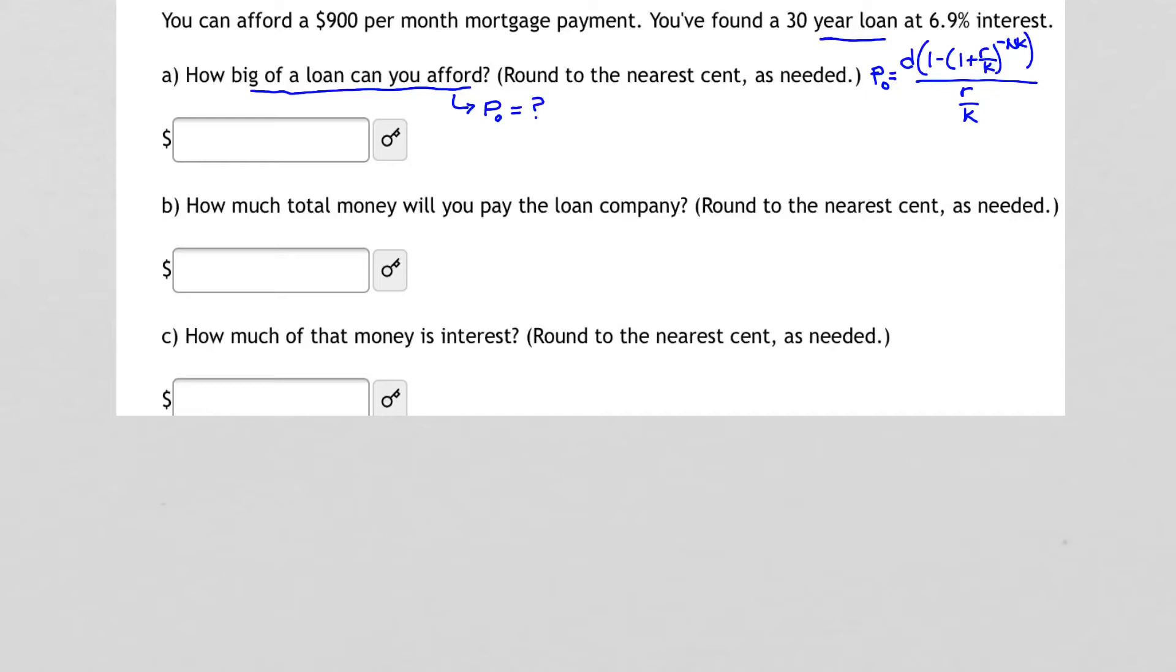We do know what D is. So let's go ahead and let's say P sub 0 equals, and what is D? D is $900, because D represents our monthly payments, times the quantity 1 minus, and what is our R? R is 0.069. And what is our K? K is the number of times we compound per year, and so K is 12, because we are making monthly payments.